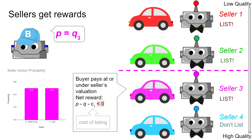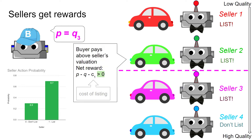Now let's look at seller 3. Seller 3 listed the car and it did get sold because seller 3 believed that he could still turn a profit from the buyer's price. However, since the price actually ended up being less than the quality of the car, compounded with the cost of listing, the net reward for seller 3 ended up being negative. Thus, seller 3 will adjust his probability distribution to favor not listing in the future. Seller 2, on the other hand, decided to list and sold his car. Seller 2's quality of car was lower than the price being offered, so seller 2 turned a profit and thus seller 2's net reward was positive. Seller 2 will use this to further incentivize listing his car in the future to maximize profits.